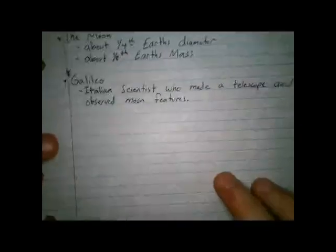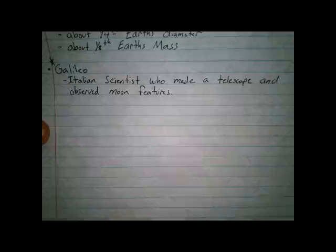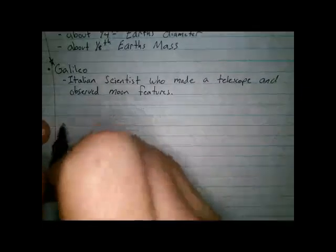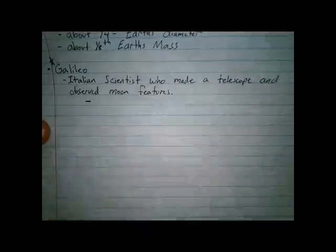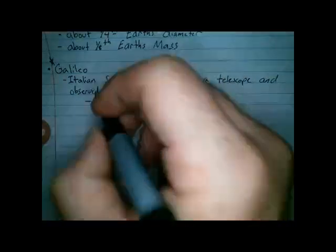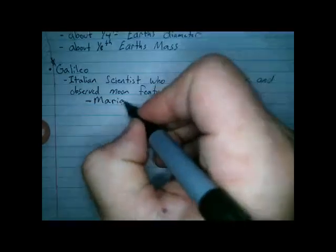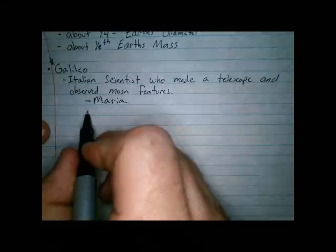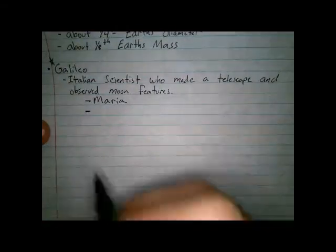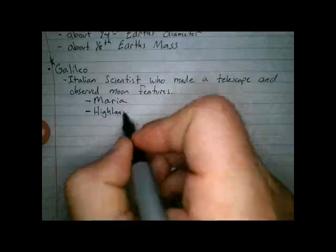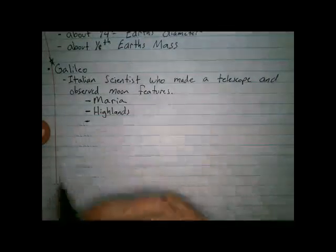Italian scientist who made a telescope and observed moon features. We're going to list those moon features in our notes, but you either already had the station with me where we talked about them more in depth, or you're going to be coming to my station next, and we'll define these features. So, the first moon feature that we're going to define is Maria. Now, don't worry about having it defined right here, because we're going to do a concept sketch later on. The next one is Highlands. And the third one are craters.